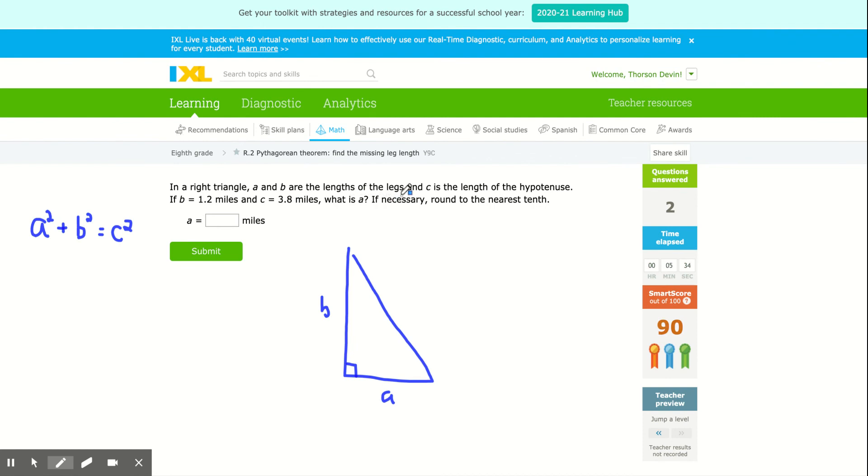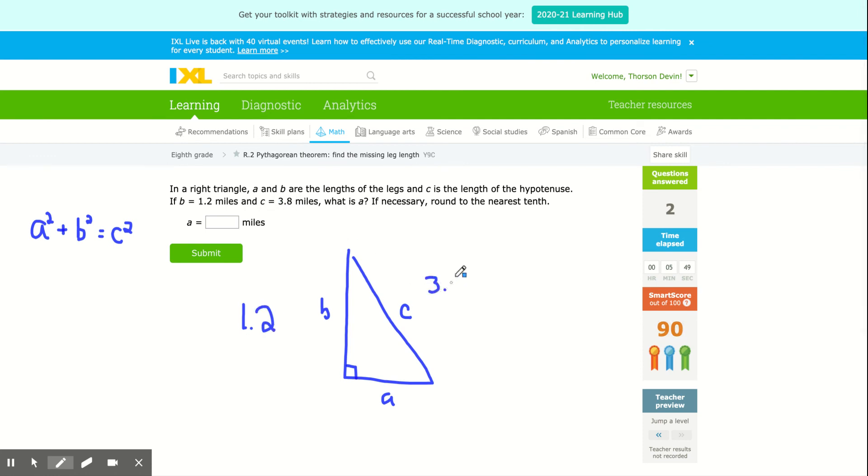It says A and B are the lengths of the legs and C is the length of the hypotenuse. It says if B, so this B side here is 1.2, and C, which is the hypotenuse, is 3.8, we want to find the value of A.